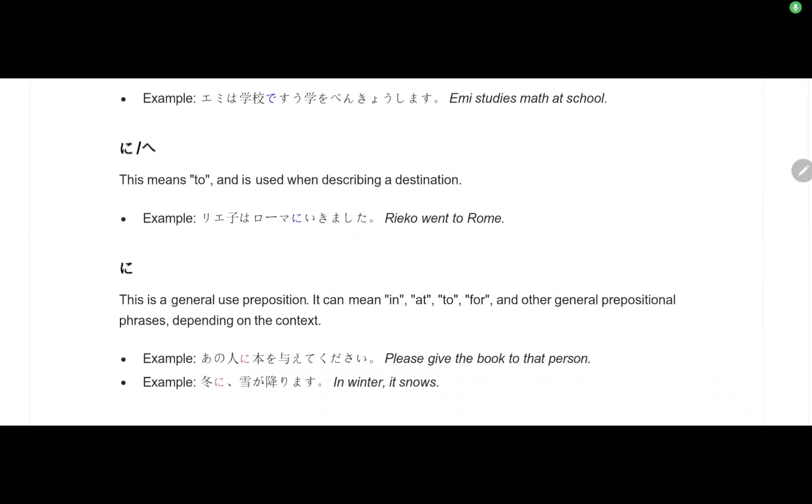Coming to the JLPT N5 grammar part. Ima wa JLPT N5 bunpo o benkyo shimasho. Let's learn the JLPT N5 grammar. Bunpo is grammar, tango is vocabulary, chokkai is listening. Today is the bunpo part.